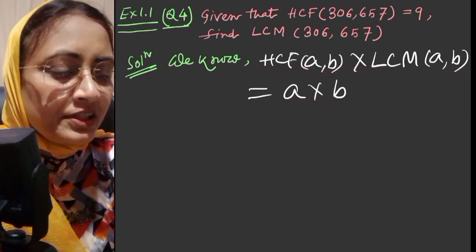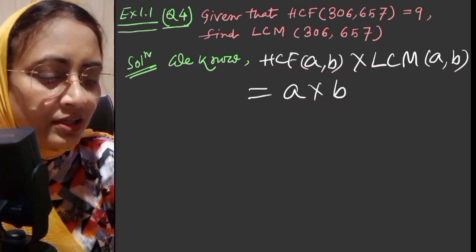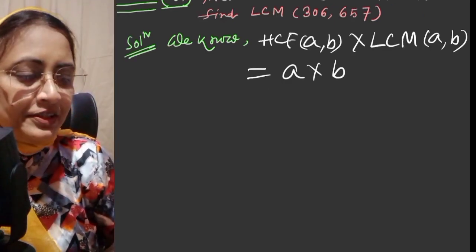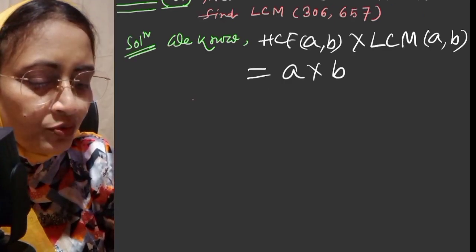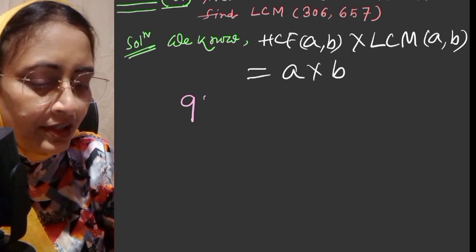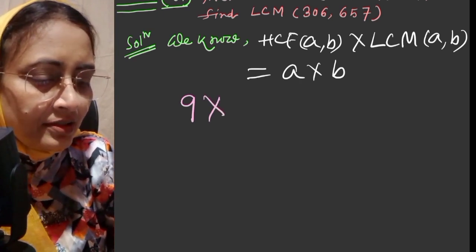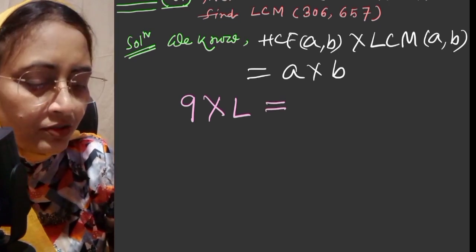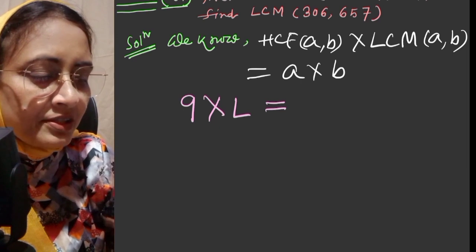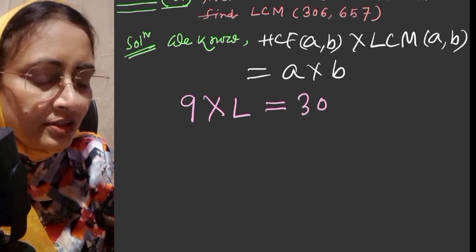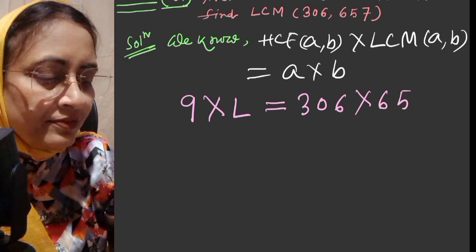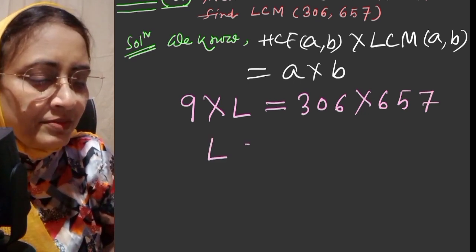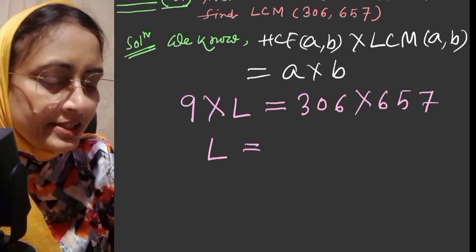Now here, given HCF of 306 and 657 is equal to 9. I'm writing the numbers according to this property. We can write 9 times LCM - I'm writing here L in place of LCM - this is equal to product of the numbers. Both numbers are given: 306 is one number and another number is 657.